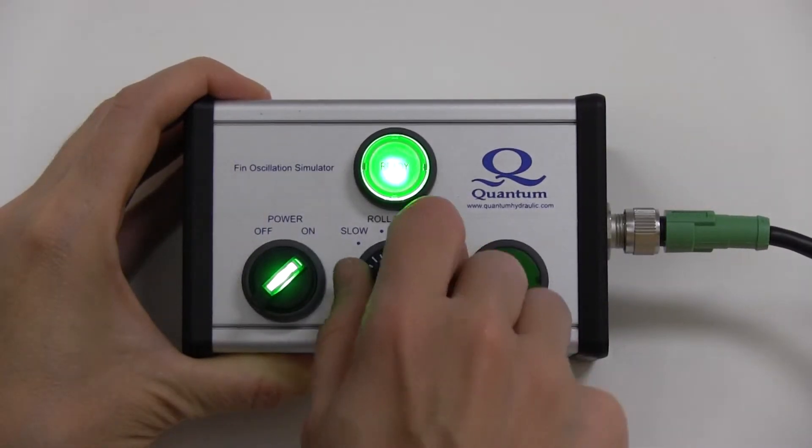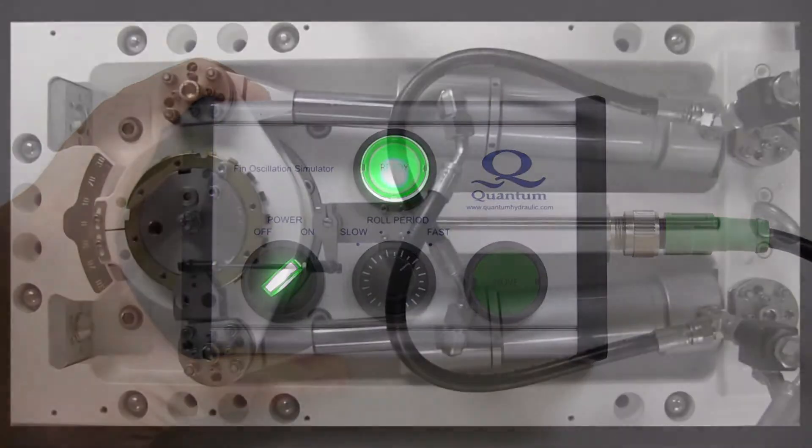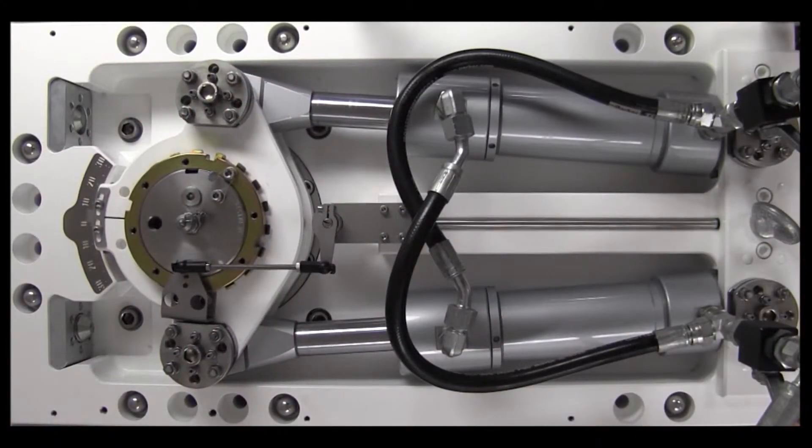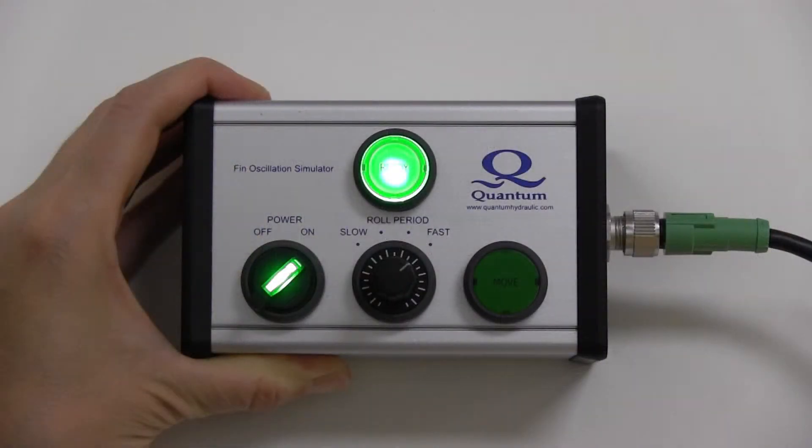The speed of stabilizer rotation increases with each clockwise turn of the knob. To minimize rolling motions of the ship due to stabilizer oscillation, it is best to set the roll period knob so that it is not close to the ship's natural roll period.